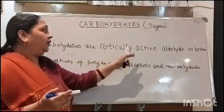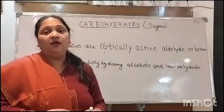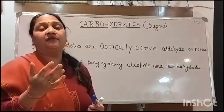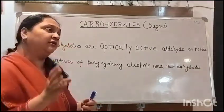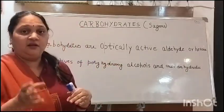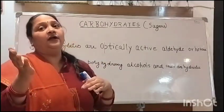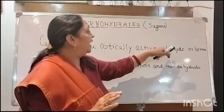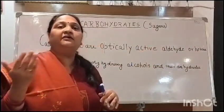What does optically active mean? Optically active substances are those in which, if we pass plane polarized light, it will rotate the light. They can rotate plane polarized light either to the right direction or to the left direction. Ketone and aldehyde, as you know, are functional groups.